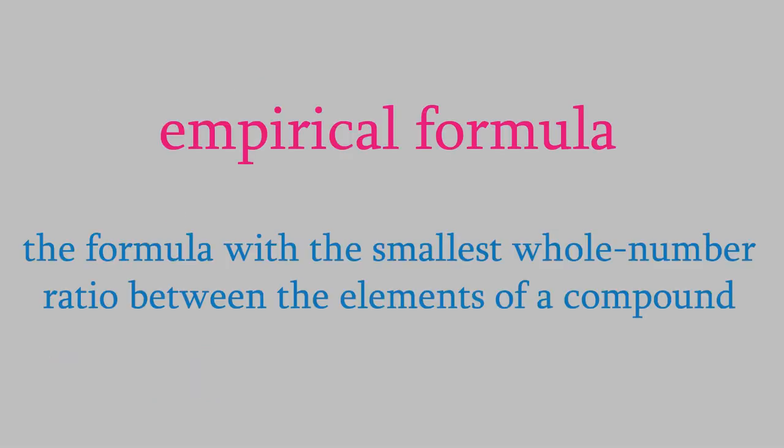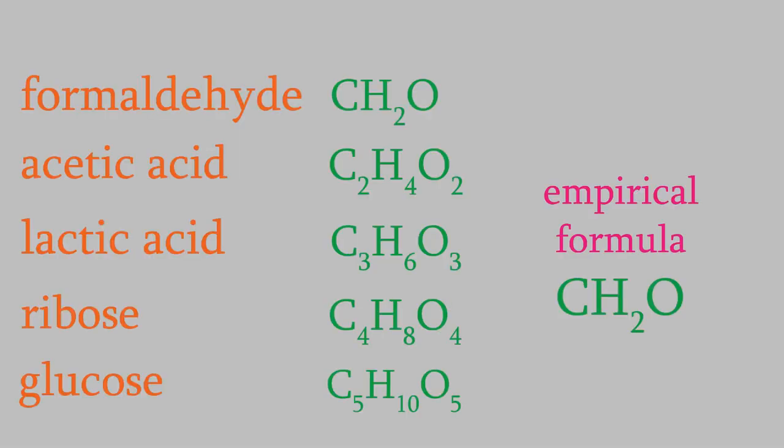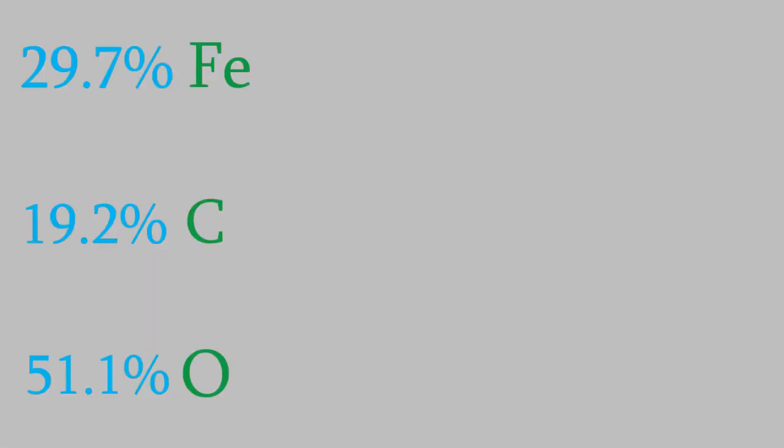So remember, the empirical formula tells us the ratio between the numbers of each element in the compound. For example, earlier we saw the empirical formula CH2O. That means that for every mole of carbon, there are two moles of hydrogen and one mole of oxygen. But the percentages we have tell us the mass of each element, not the number of moles. To get from the masses to moles, we'll need a conversion factor.